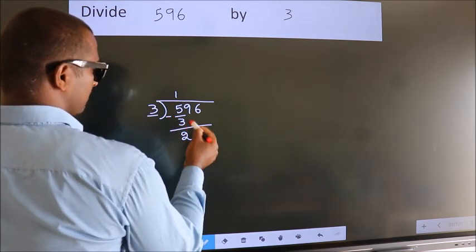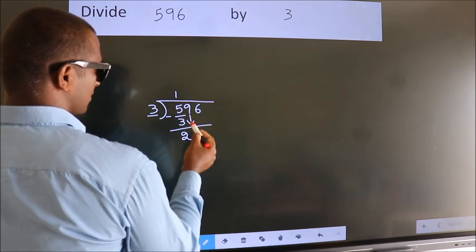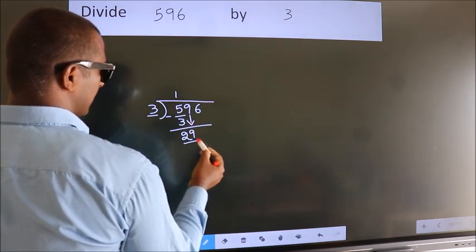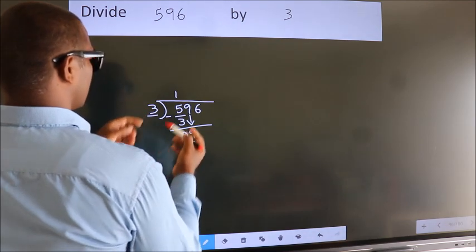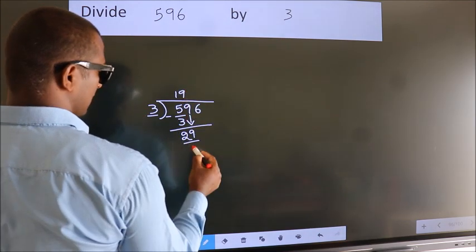After this, bring down the beside number. So, 9 down. So, 29. A number close to 29 in 3 table is 3 9s 27.